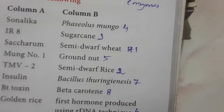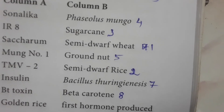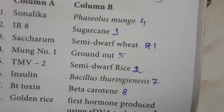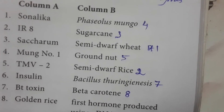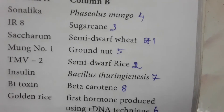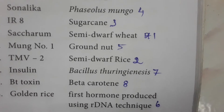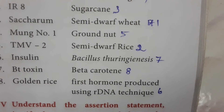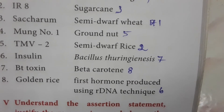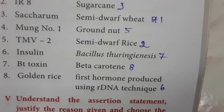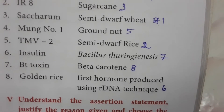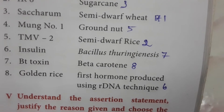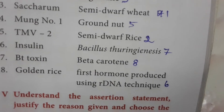Match the following: Sonalika is a semi-dwarf wheat. IR8 is a semi-dwarf rice. Saccharum is the scientific name of sugarcane. Moong number one is a variety of moong dal (Phaseolus mungo). TMV2 is a variety of groundnut. Insulin is the first hormone produced using recombinant DNA technique. BT toxin comes from Bacillus thuringiensis. Golden rice is a genetically modified variety rich in beta carotene.